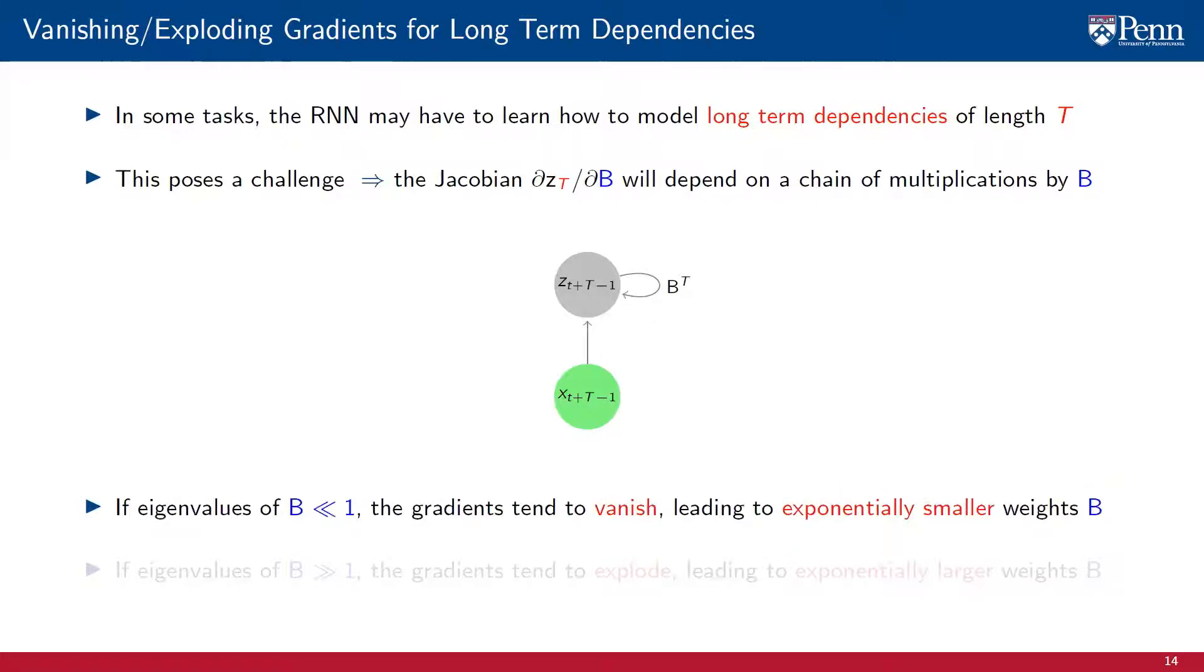What happens is that, if the eigenvalues of the weight matrix B are small, raising them to the power of T will cause the gradient to vanish, thus leading to exponentially smaller weights. If the eigenvalues of B are much larger than 1, however, raising them to the power of T causes the gradient to explode, thus leading to exponentially larger weights B.